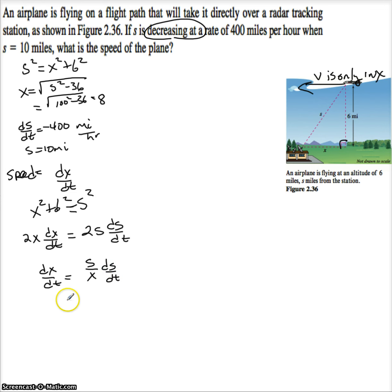So now let me just plug things in. S is 10. X is, now we already figured that out, that's 8. And dS dt, it's decreasing so it's negative 400. So my answer is negative 500 miles per hour.